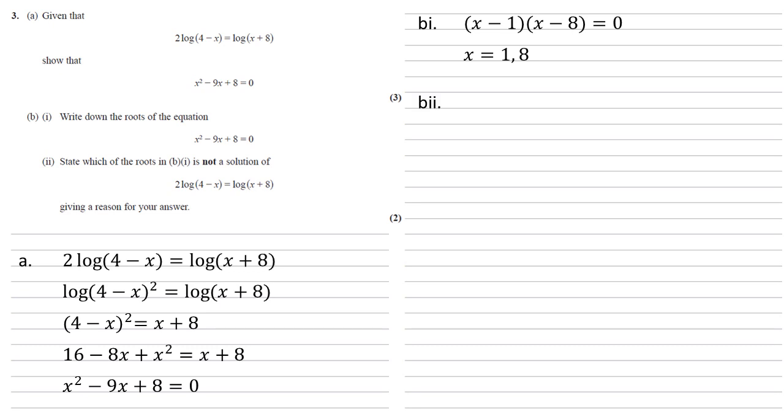Now for part 2 we need to state which of the roots that we've just found is not a solution of 2 log(4 - x) equals log(x + 8), and give a reason for our answer. Looking at our answers, if we chose x equals 8 and tried to put that into the left hand side, we'd end up with log(4 - 8), which is log(-4). We can't do a log of a negative, it can't be found, hence x equals 8 is not a solution.